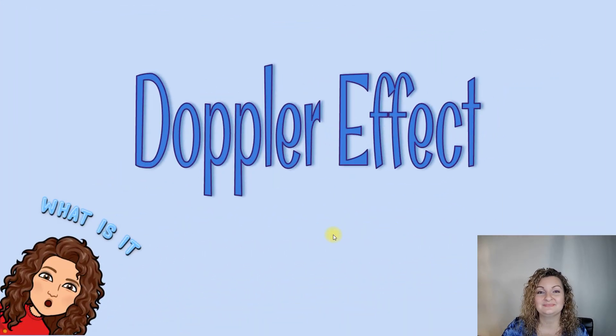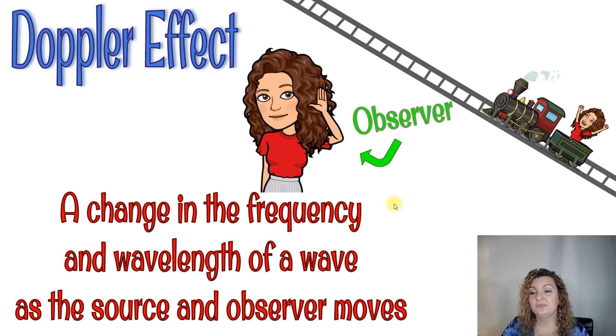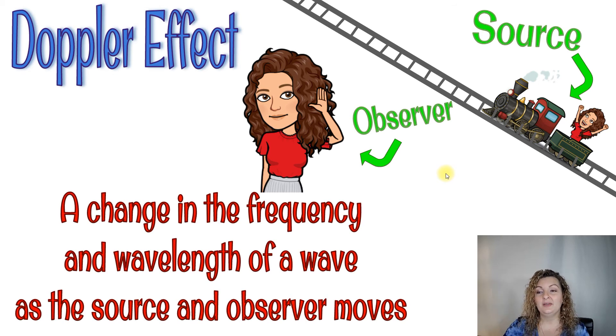Doppler effect. So Doppler effect is a change in the frequency and wavelength of a wave as a source and observer moves. So right here we have an observer. An observer is just a person listening to a sound. And then we have our source. And the source is what's actually creating the sound or the noise. In this case, it's a train. So as the train is moving towards the observer, the person listening, those wavelengths are going to be really short, which means it has a very high frequency, which means a high pitch.